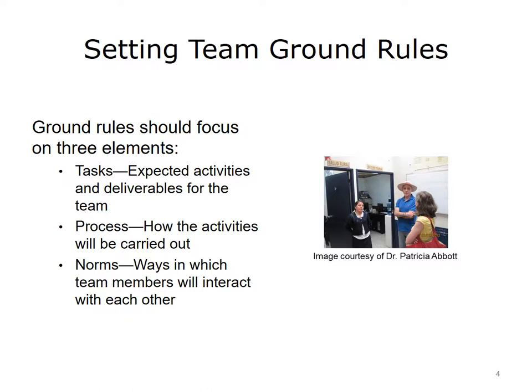Ground rules focus on three elements: task, processes, and norms, and lay out the expectations and governance around each one. Task ground rules lay out the tasks, the expected activities around the task, and the team deliverables associated with the task. Process ground rules specify the rules that govern the execution of the task or the processes undertaken in reaching the team goal. Norm ground rules are those that dictate the manner in which team relationships will be handled — for example, allowing the sharing of ideas, not interrupting, etc. Ground rules can also be used to determine procedures and assignments, as well as how to solve problems and conflicts.